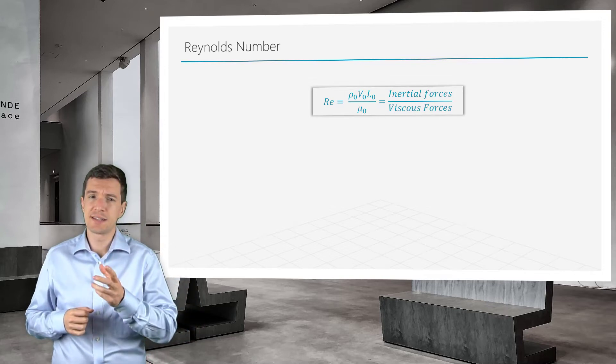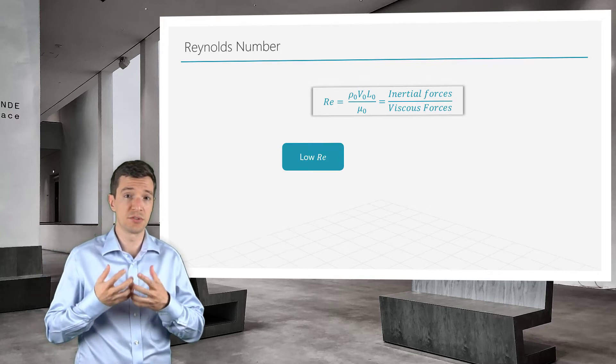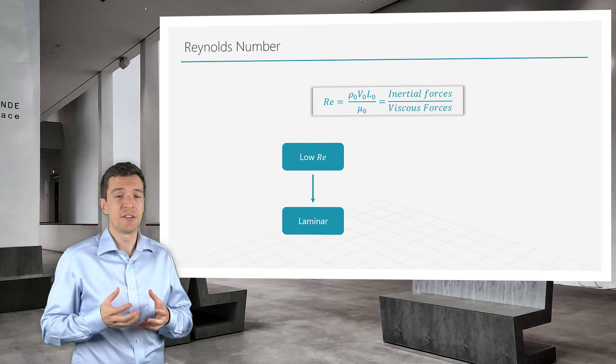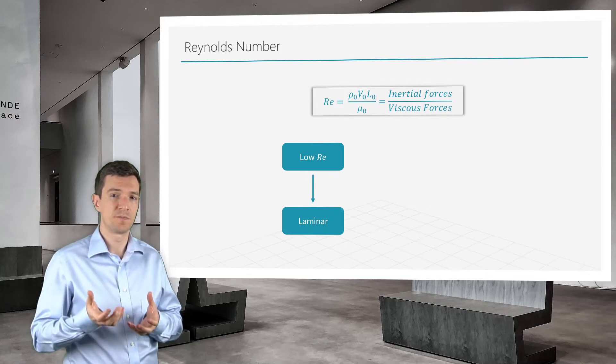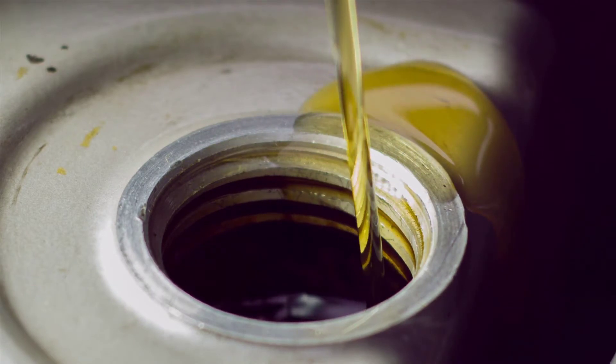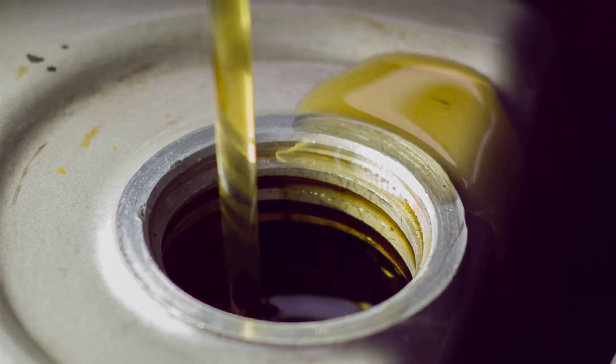This tells us that low Reynolds number flows are dominated by viscous forces. This sort of flows are defined as laminar flow. As an example, if we pour motor oil, we will see that this really viscous fluid will smoothly flow down by the effect of gravity. That is a laminar flow.